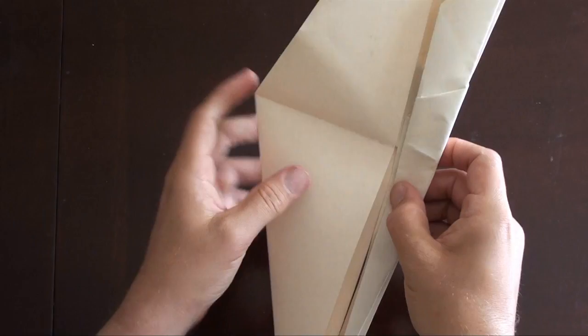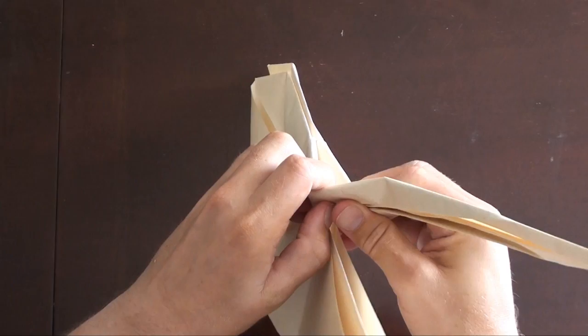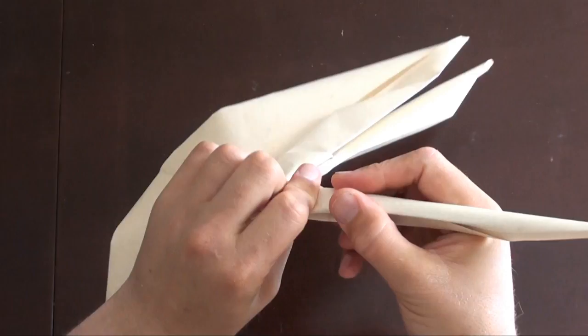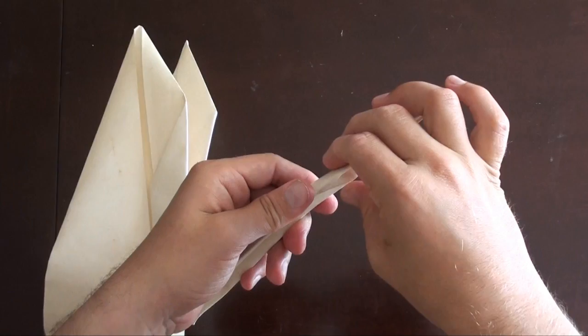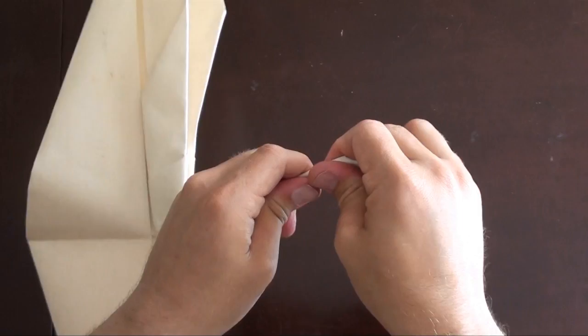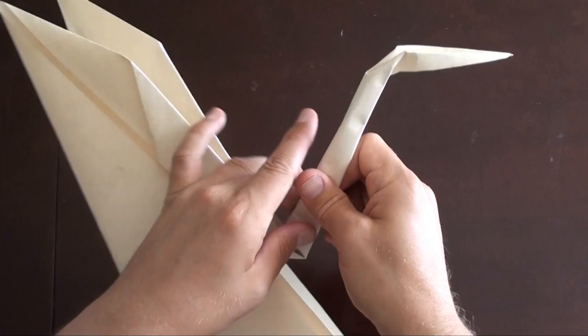All right. And let's do the reverse fold right now. Let's get this crane head out of the way. Okay. So reverse fold as you would a normal crane. Just like this. And reverse fold the head. Right like this. And there's the very skinny crane head. More like a snake head, but whatever.